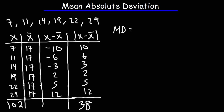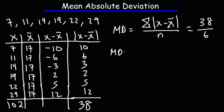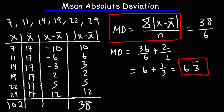Now to calculate the mean absolute deviation, it's going to be the sum of the absolute value of the difference between each data point and the mean, divided by n. So this value we already have, which is 38, and n is 6. So it's going to be 38 divided by 6. We can split this as 36 over 6 plus 2 over 6: 36 over 6 is 6, and 2 over 6 reduces to one third, which is 0.3 repeating. So the mean absolute deviation is 6.3 repeating. That is the mean absolute deviation for this particular problem, and this is the formula you need in order to get the answer.